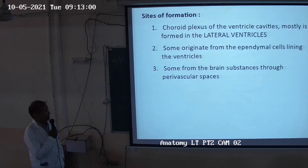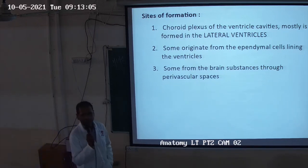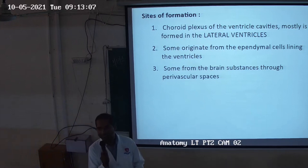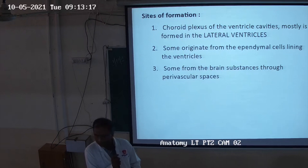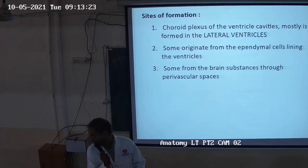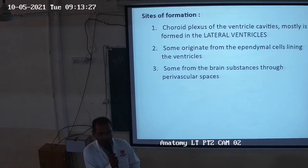The choroid plexus of the ventricle cavity is mostly formed by the lateral ventricle. The lateral ventricle is a cavity of the forebrain — you can say, the cerebral hemisphere.